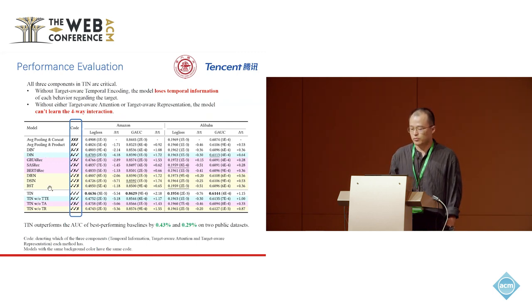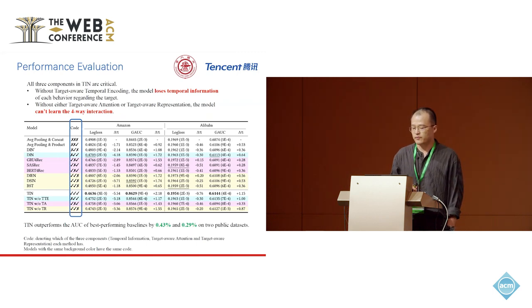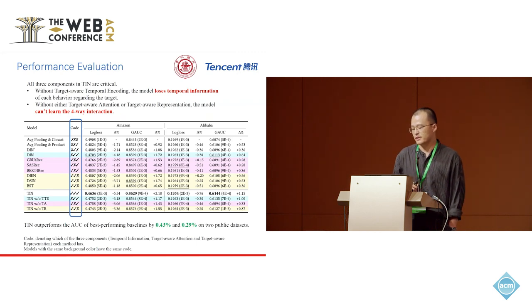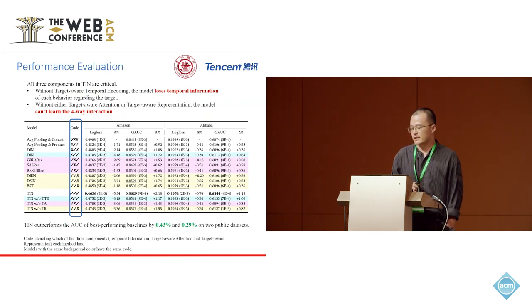On two public datasets, Amazon and Alibaba, TRN outperforms the AUC of the best-performing baselines by 0.43% and 0.29% respectively.